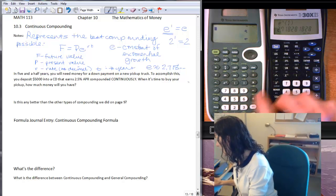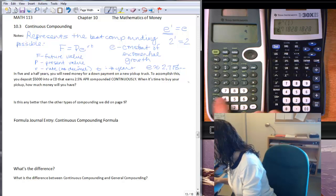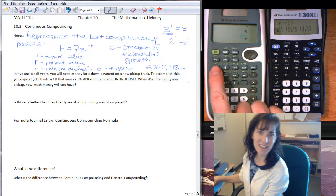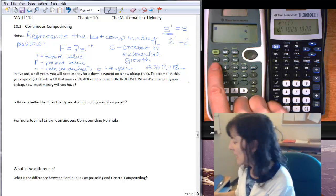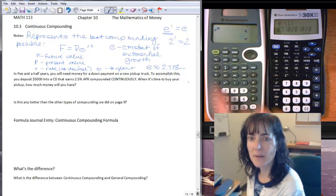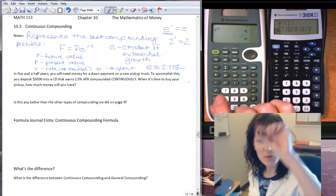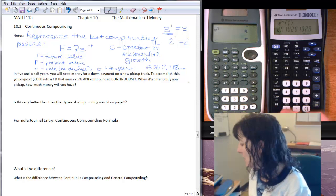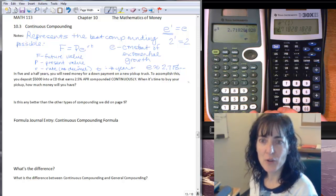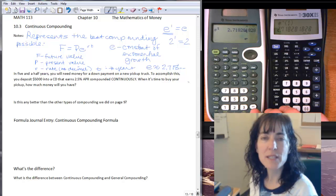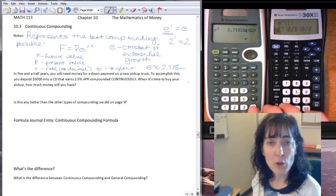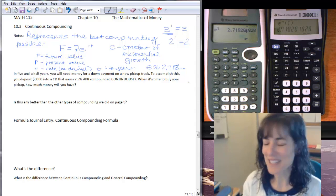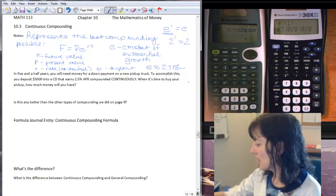For this calculator, if I turn it on, I'm looking for the E to the again, and there I see it right above the LN key. That looks like a pattern there. So I'll do second, LN, and then I have E to the, and this one is just showing it as up in the exponent position. I'll put in a one, and then I'll push enter, and you can see that same value, 2.718, and so on. When you get that 2.718 when you do E to the first, then you know you found the correct E. Let's look at one more calculator.